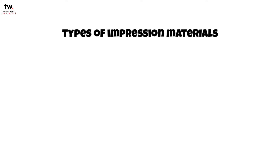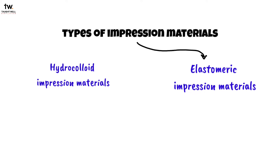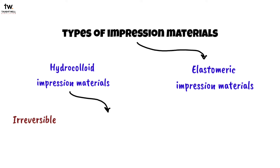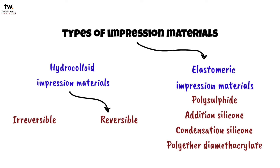There are numerous types of impression materials available in the industry, like hydrocolloid impression materials and elastomeric impression materials. In hydrocolloid, there are irreversible and reversible types. In elastomeric impression materials, there are polysulfide, addition silicone, condensation silicone, and polyether dimethacrylate.